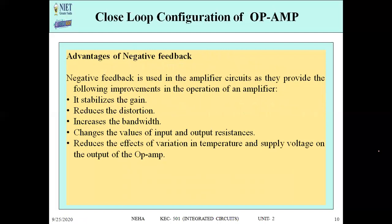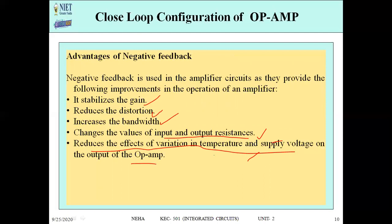We mostly use negative feedback in op-amp circuits. The advantages of negative feedback over positive feedback are: it stabilizes the gain, which was our biggest concern. It also reduces distortion, increases the bandwidth, and increases input and output resistance. It reduces the effect of variation in temperature and supply voltage on the output of the op-amp. These are all the advantages that make us prefer negative feedback.